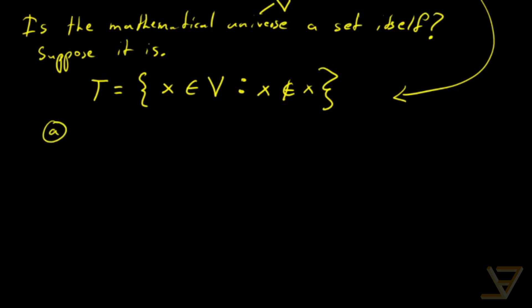In the first case, if T is an element of T, then we get T is not an element of T. And in the second case, if T is not an element of T, then we get T is an element of T. So, we get a contradiction either way.